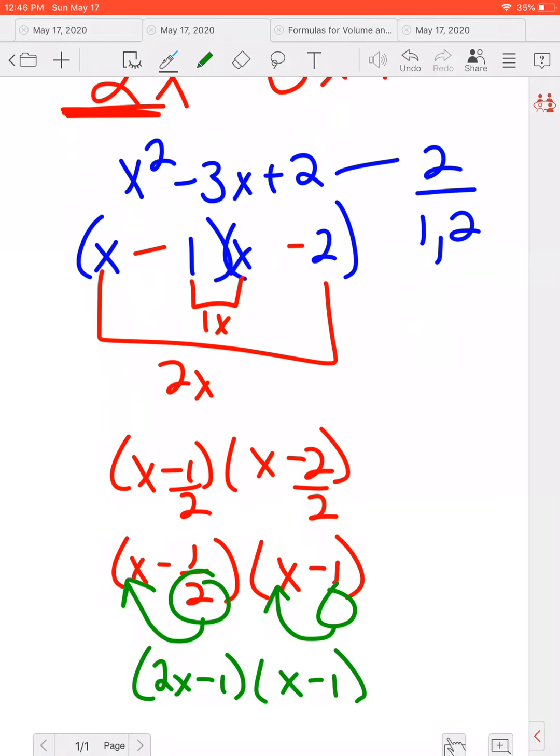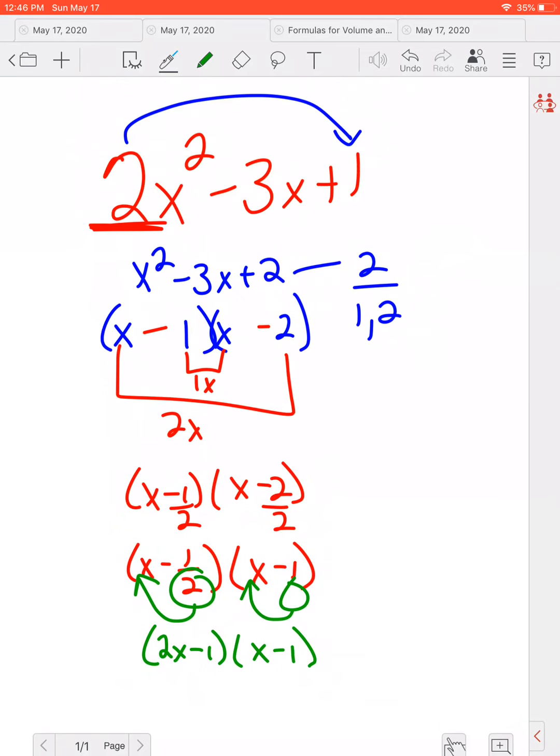So this would be 2X minus 1 times X minus 1. And if we were to foil that out or use Back's method, we would get back our 2X squared minus 3X plus 1.